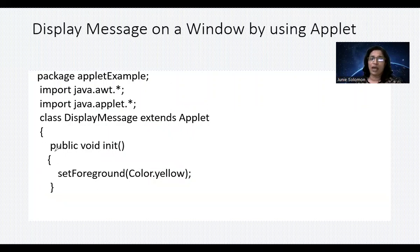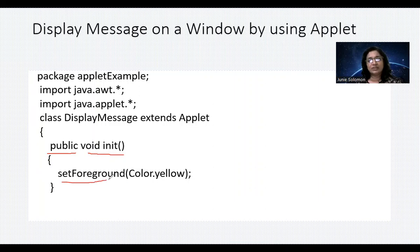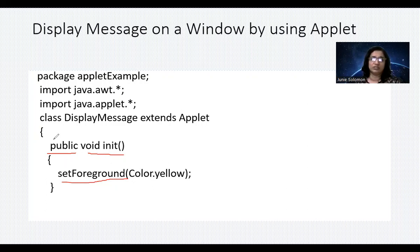Since we are overriding the method, use public void init. Inside, use the setForeground method with Color.yellow as the parameter. This is how you set up the foreground color in the init method.